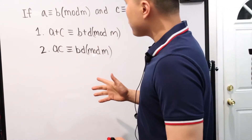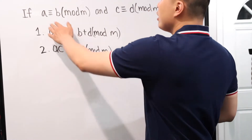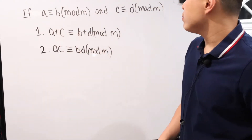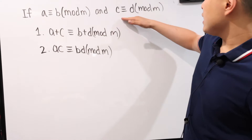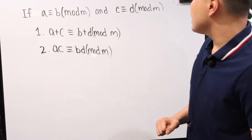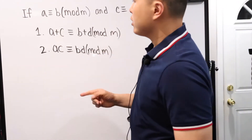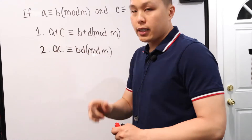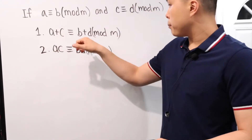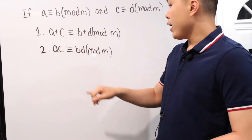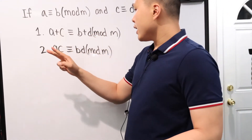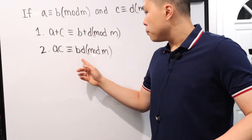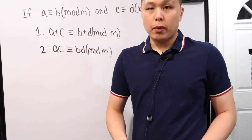There are two properties. If A is equivalent to B mod M, and C is equivalent to D mod M, then we have two things. First, if you add them together: A plus C is equivalent to B plus D mod M. Second: A times C is equivalent to B times D mod M.